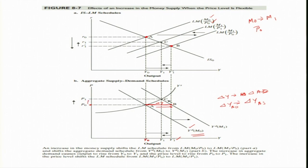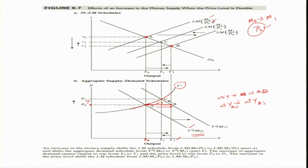Firms gradually increase the price, so the price level increases from P naught to P1. They have an upward sloping supply curve. When we assume a fixed price level of P naught, the implicit assumption is that the aggregate supply curve YS is a horizontal curve. But in the IS-LM model, when we relax that assumption and make the price level flexible, the aggregate supply curve is upward sloping. Early Keynesians believed in a perfectly elastic horizontal aggregate supply curve, but later revised this to an upward sloping aggregate supply curve.